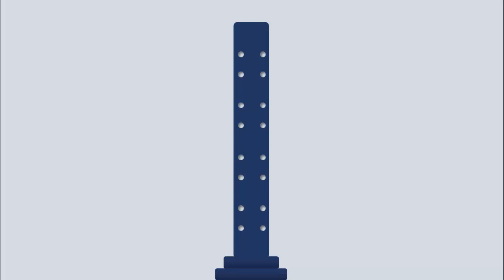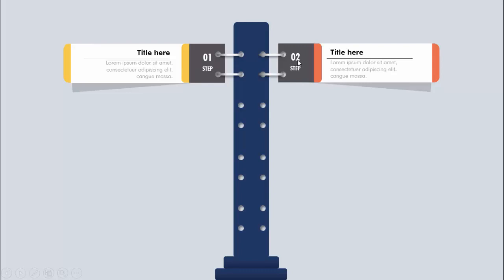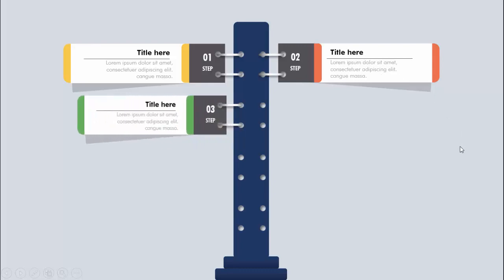In today's tutorial I'm going to show you how to create an eight-options infographic slide in PowerPoint. When I click, you can see it will show the first option — Option One — and you can add some title and detailed text here. On the right side you can add Step Two or Option Two with its title and detailed text.